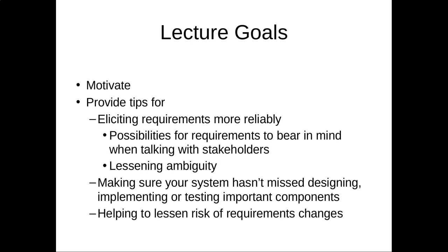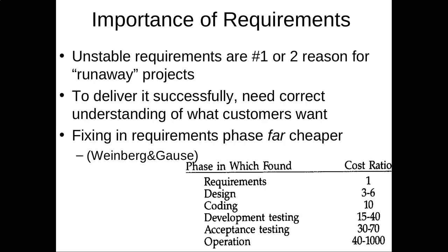I'm going to motivate it just a little bit. Requirements gathering is arguably the single most important thing in software development. I say arguably because there are some other components that are also extremely important, but it's certainly one of the very top. It's one of the top reasons for failure in software development — that a project doesn't meet success. I'm going to focus most of my attention today on providing tips to elicit things more reliably: lessening ambiguity, avoiding missing requirements, and helping to lower the risk of requirements changes.